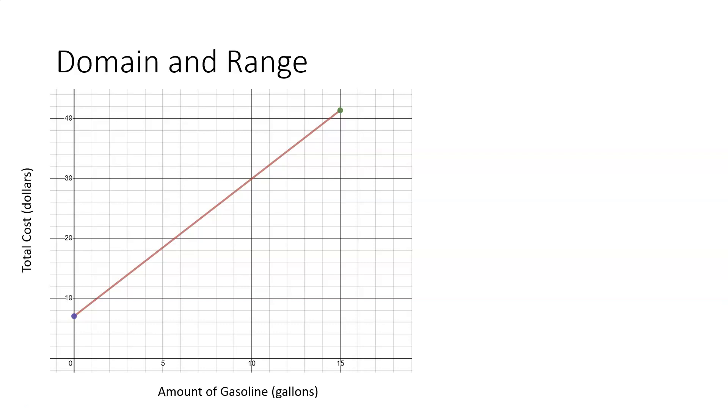Now if you think back to what our domain was, here on our graph we can actually see our domain represented through the x values. And so what that's going to mean for our range is our range is the set of y values on our graph.